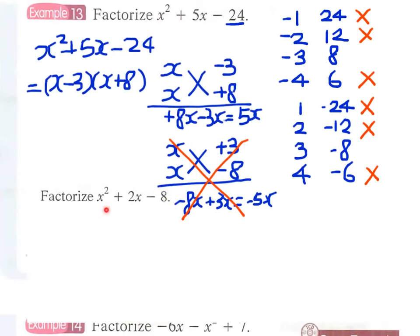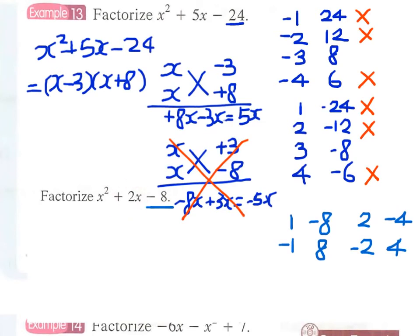Now we have another practice problem: x² + 2x − 8. We decompose minus 8 into factor pairs: 1×minus 8, minus 1×8, 2×4, or minus 2×4. We have to make up the middle term plus 2x, and it is obvious that the pairs 1×minus 8 and minus 1×8 have no hope of making up the middle term.